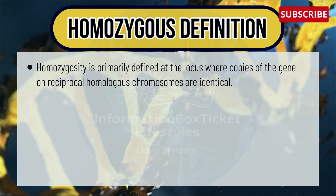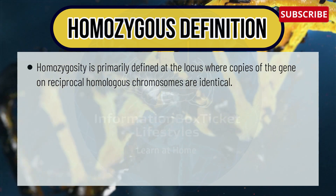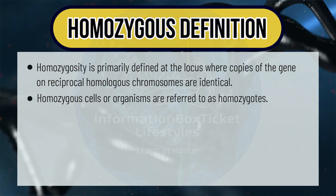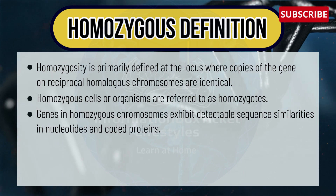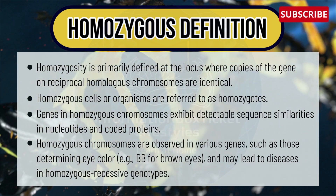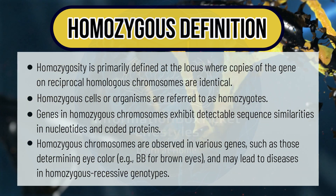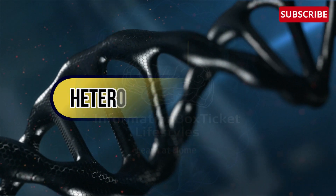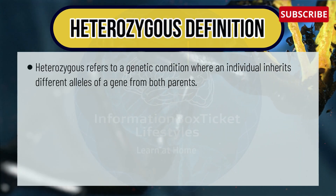Asexual reproduction methods like parthenogenesis lead to homozygous chromosome formation, ensuring identical phenotypic characteristics in offspring. Homozygosity is primarily defined at the locus where copies of the gene on the reciprocal homologous chromosomes are identical. Homozygous chromosomes exhibit detectable sequence similarities in nucleotides and coded proteins, and are observed in various genes such as those determining eye color — for example, BB for brown eyes — and may lead to diseases in homozygous recessive genotypes.